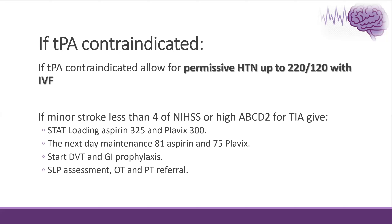If the patient is outside the window or not a candidate for TPA, we keep blood pressure high as a mechanism to help reperfuse the area and monitor the other parameters. For minor stroke — NIH stroke scale less than 4 — or TIA, we give a loading dose of aspirin and Plavix with maintenance of both antiplatelets for three weeks, then continue on single antiplatelet. All these patients will have DVT prophylaxis, GI prophylaxis, swallowing assessment, occupational therapy, and physical therapy referral.